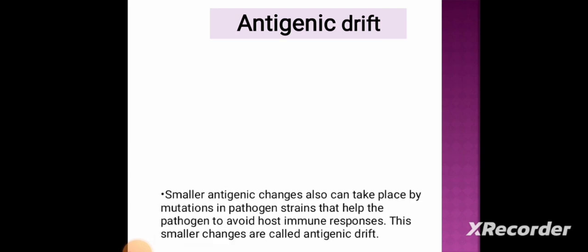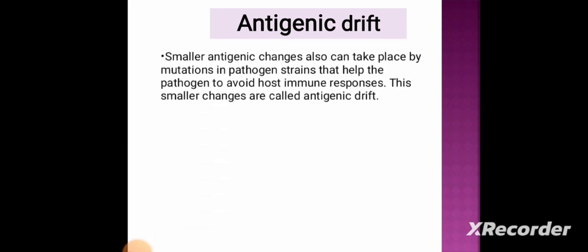Now let's discuss antigenic drift. These are smaller antigenic changes that can take place by mutation in a pathogen strain. These smaller changes help the pathogen to avoid the host immune response and are called antigenic drift.